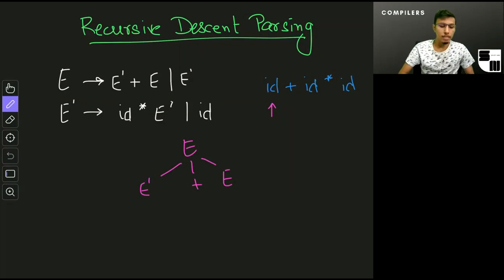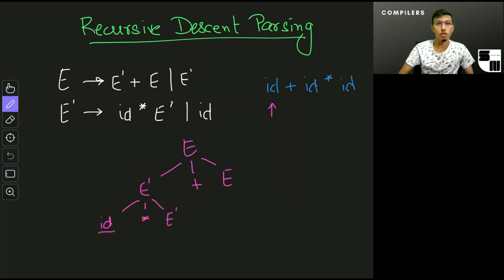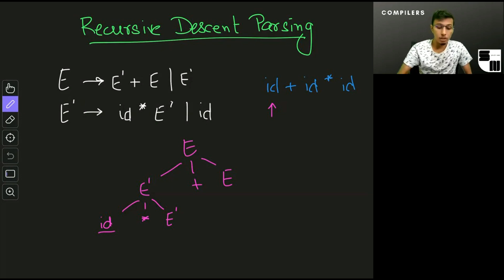I try to expand this further and use the first production rule for E' to get 'id times E''. At this point my leftmost symbol is not a non-terminal, so I can compare it to my input. It does match, so I move the cursor one step ahead.